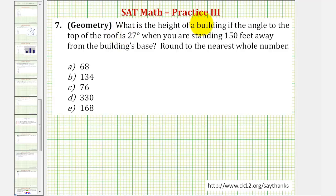Welcome to a practice SAT math question. Our question is, what is the height of a building if the angle to the top of the roof is 27 degrees when you are standing 150 feet away from the building's base? We want to round our answer to the nearest whole number, or in this case, the nearest foot.